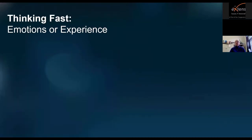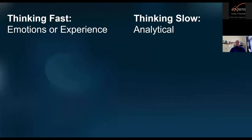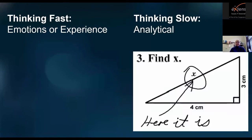The second predominant way we process information is referred to as thinking slow — that's more analytical. Maybe you're looking at a math problem that takes a few seconds to think about. It doesn't come quickly and it takes more energy. That's sometimes why we're so tired after a long day of work where we didn't seem to do much physically, but we did a lot of thinking.